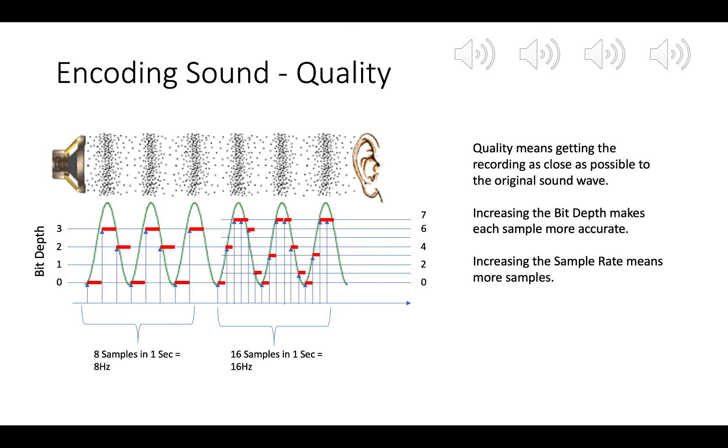Now, on the right-hand side, I've upped my sample rate to 16 hertz. So that means 16 samples per second. And I've upped my bit depth to 3 bits. So that means I have 8 possible levels: 0, 1, 2, 3, 4, 5, 6, 7. And you can see that the red lines now, well, first of all, the red lines are narrower because we have more samples in a second. And also, there are more levels which we can record at because I've increased my bit depth. So this is going to get us an improved quality sound recording.